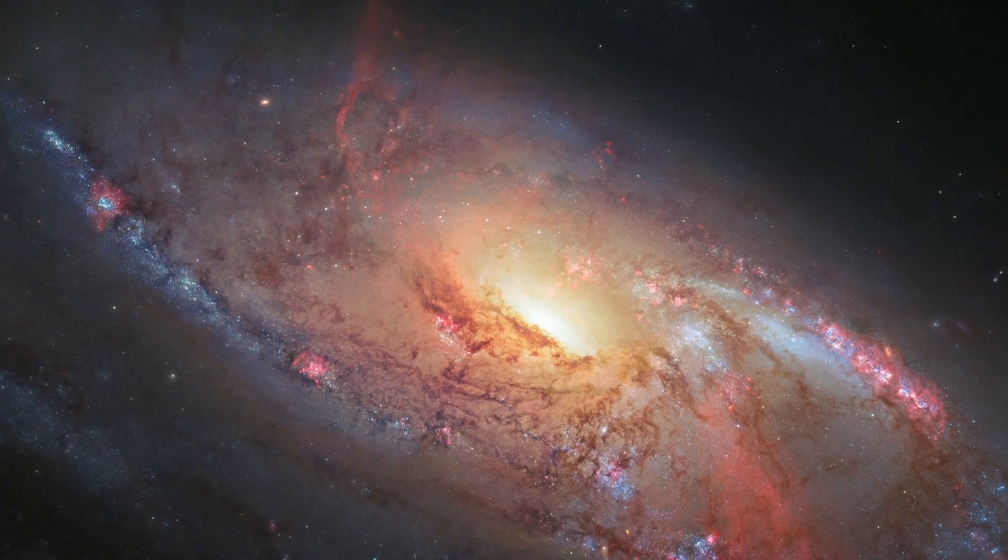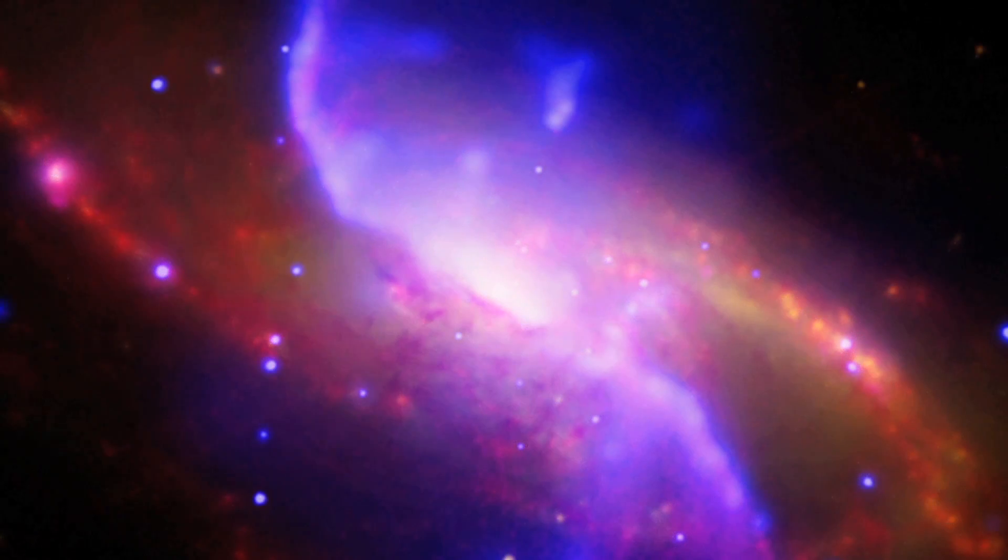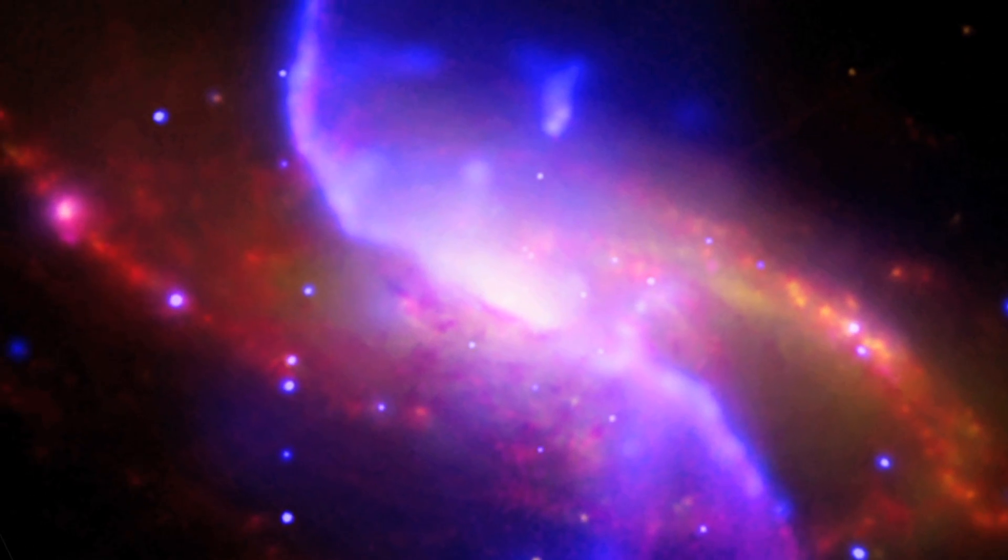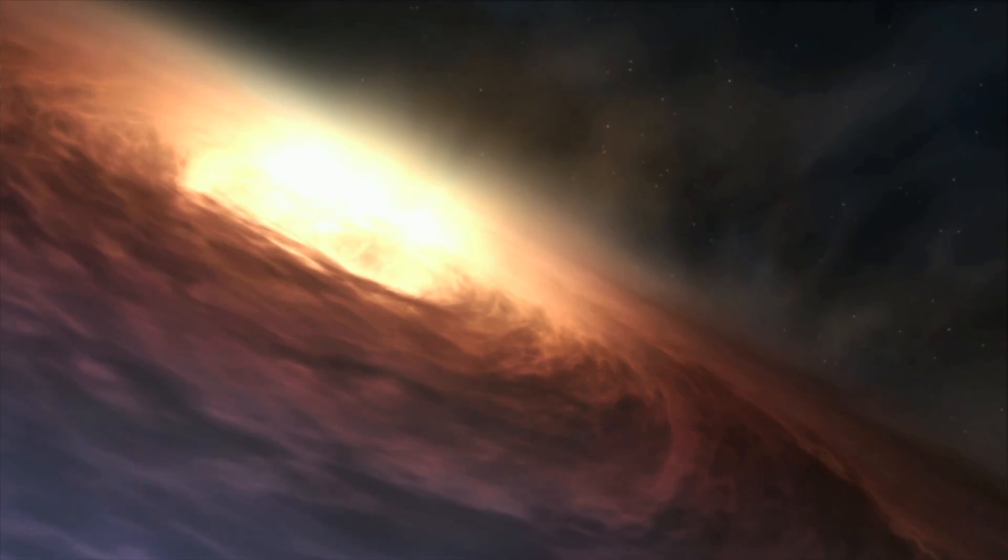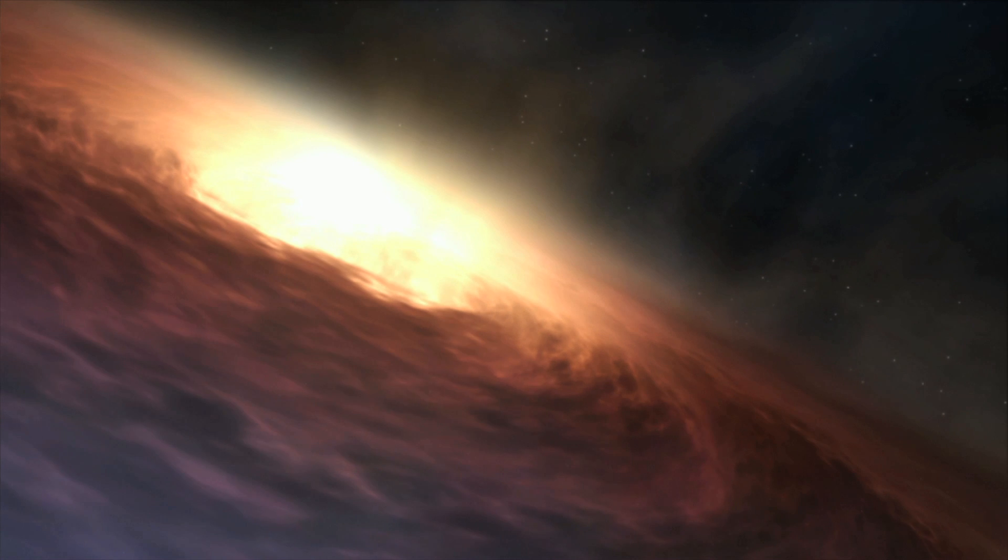While these ghostly extra arms have been known about for decades, astronomers were unsure of how they formed until recently. Yet again, the culprit is Messier 106's supermassive black hole.